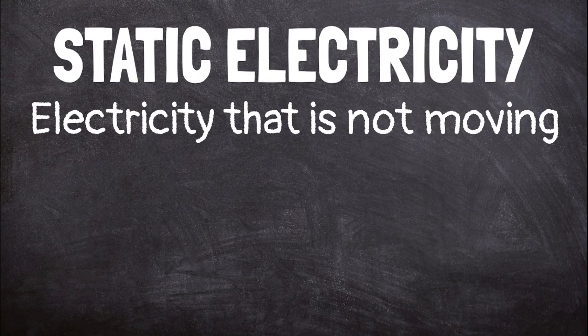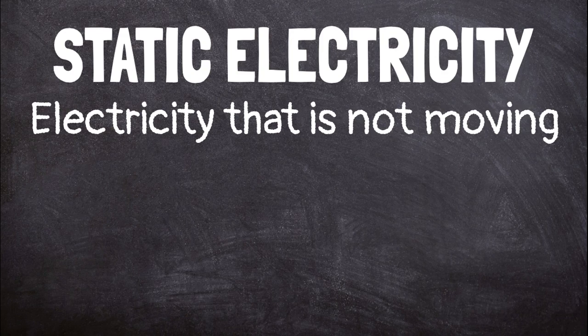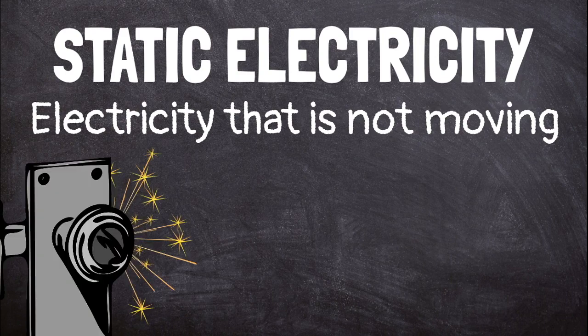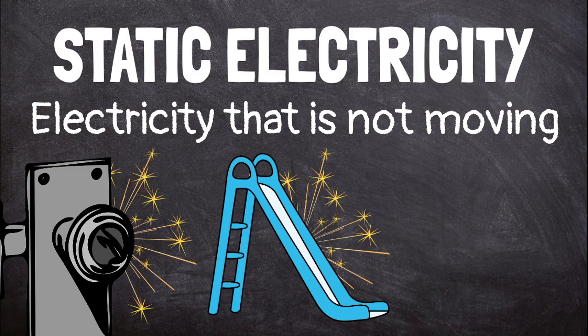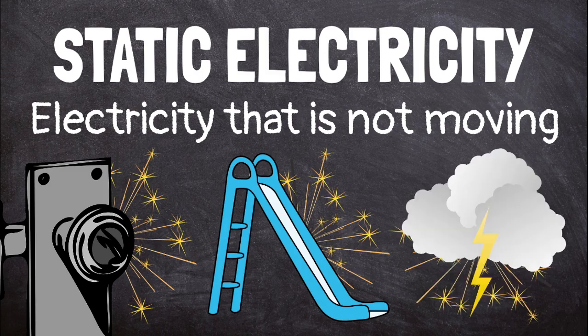Static electricity is electricity that is not moving. You have experienced static electricity if you've ever shocked yourself by touching a doorknob, had your hair stand on end after going down a slide, or seen a flash of lightning during a thunderstorm. These are all examples of static electricity.